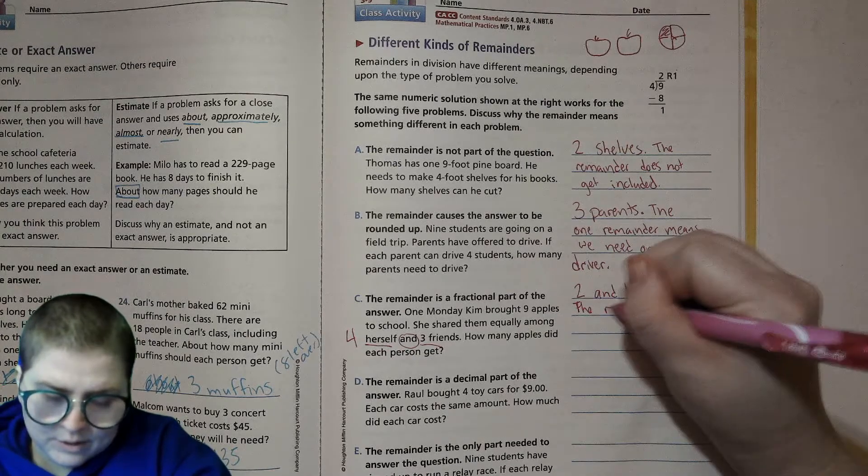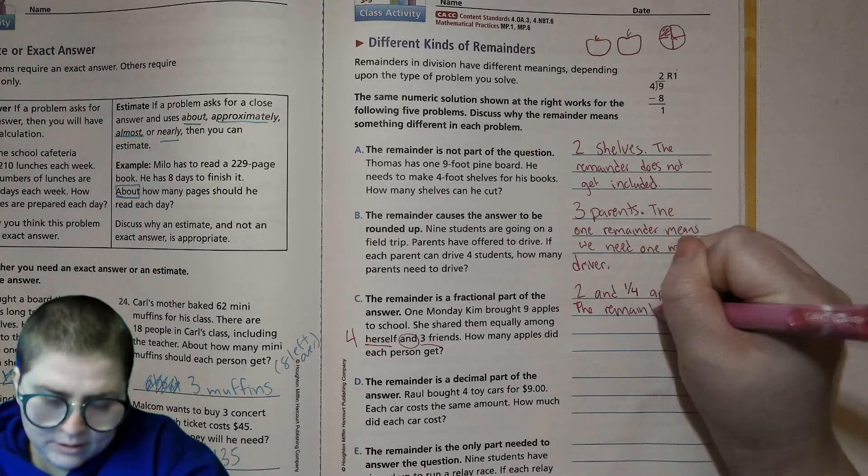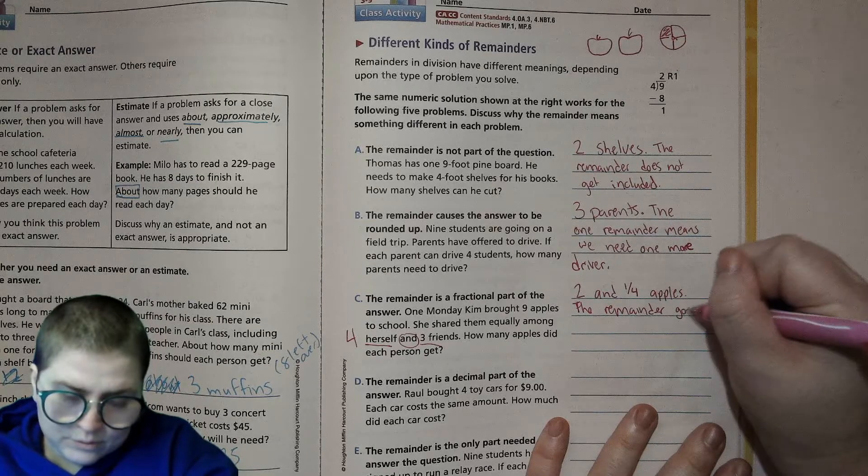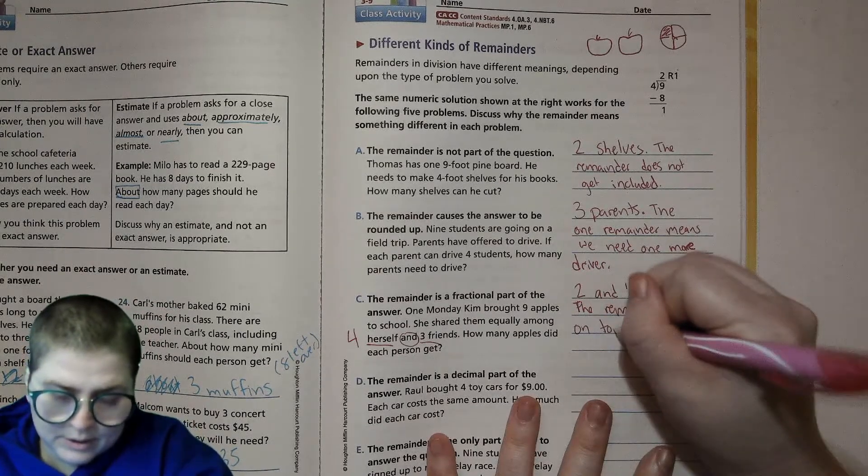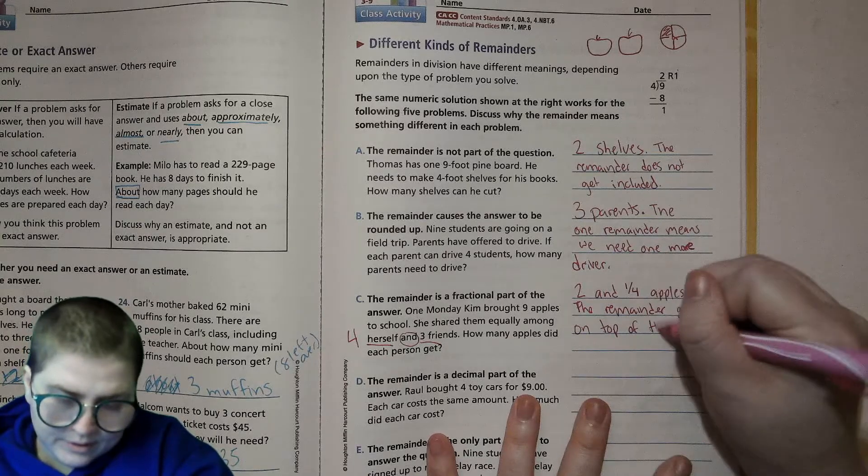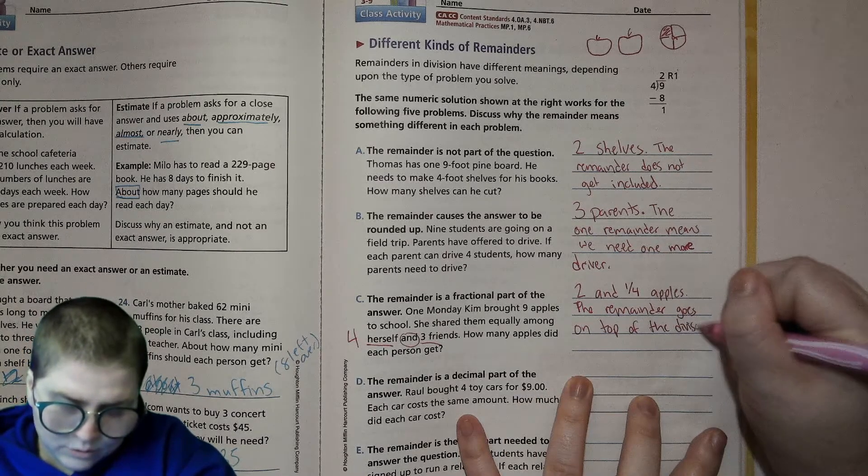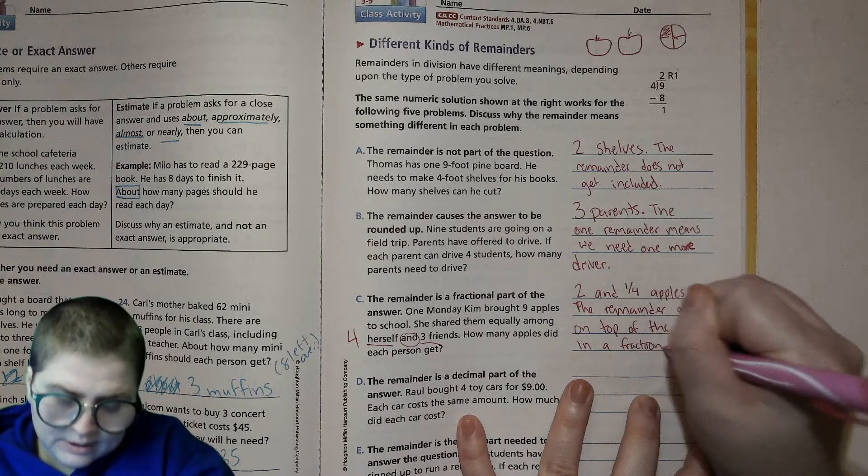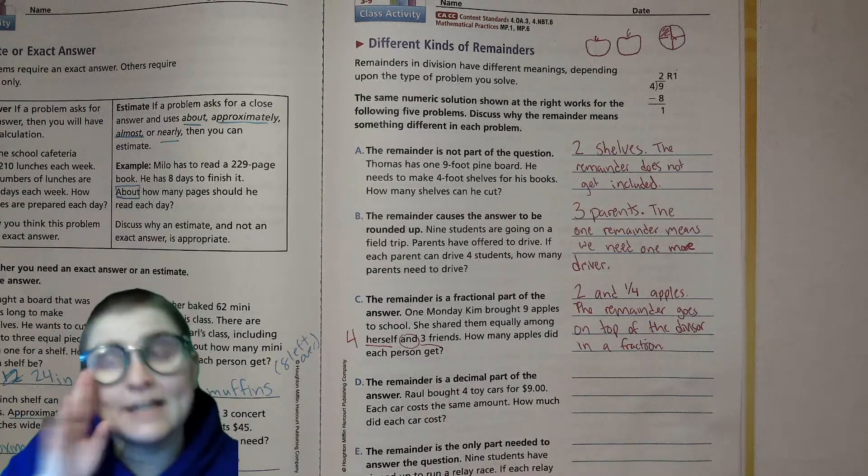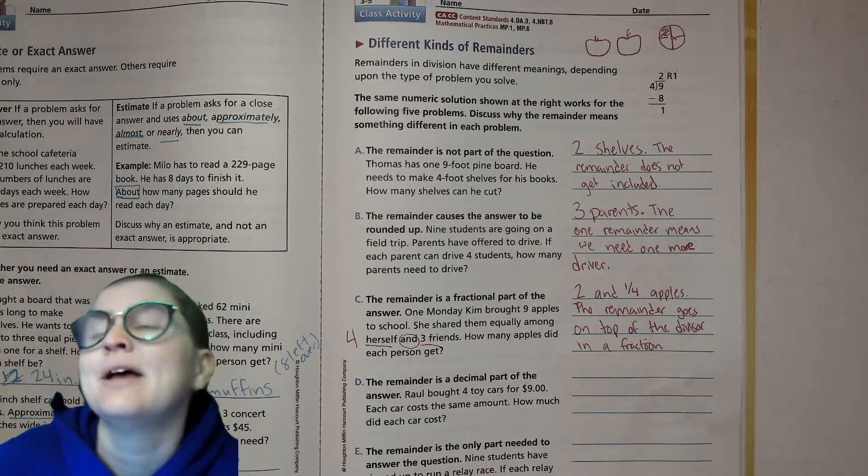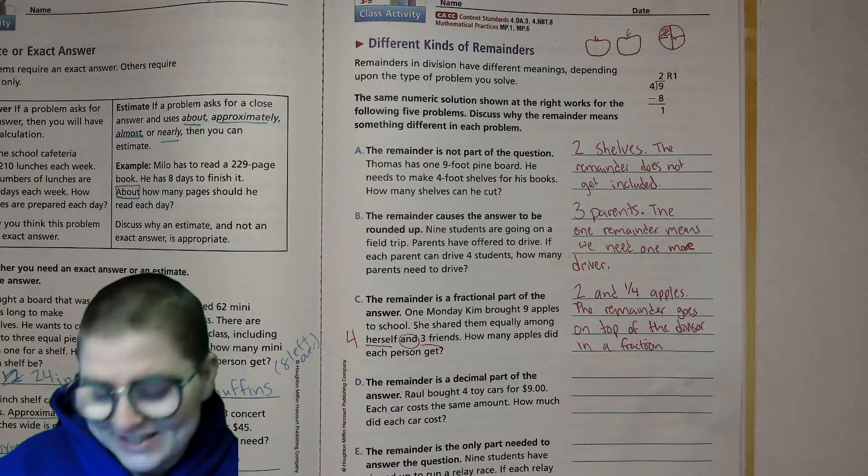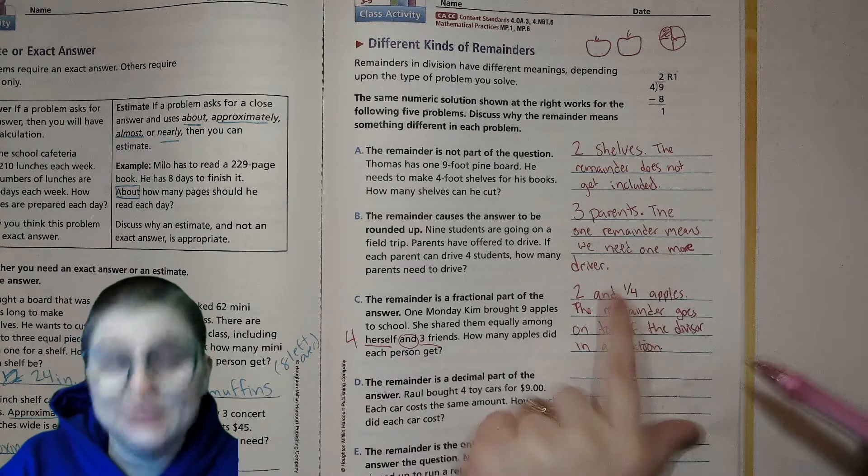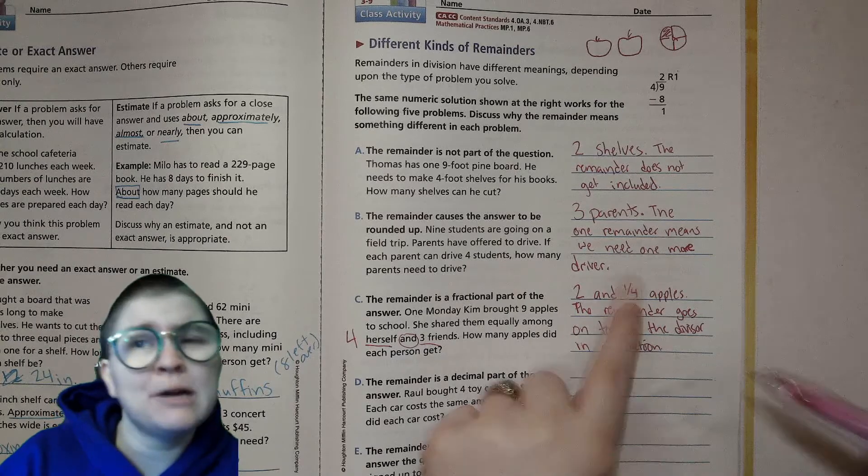Two and one-fourths. The remainder goes on top of the divisor in a fraction. Now we're gonna talk a lot more about fractions later, so don't stress out. When we do fractions we'll give you the fancy language for it, but if you're interested it's numerator on the top and denominator on the bottom, and you might remember that from third grade.